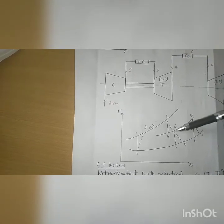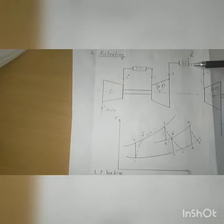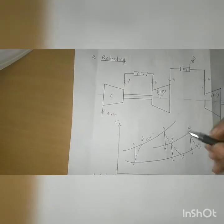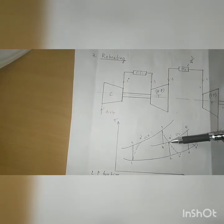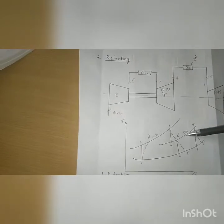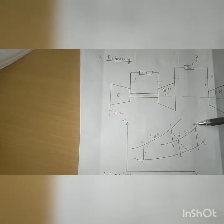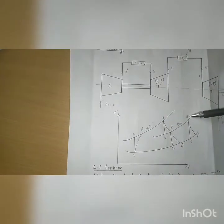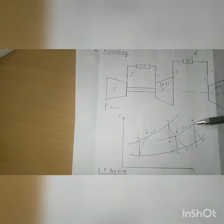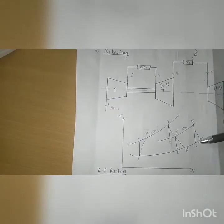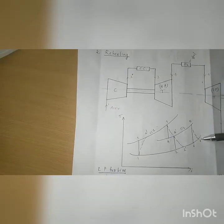Again, combustion chamber 2 (CC2) is used. In this combustion chamber, the temperature increases from T4 to T5. Then it expands again in the low pressure turbine — 5 to 6 is ideal and 5 to 6 dash is actual.